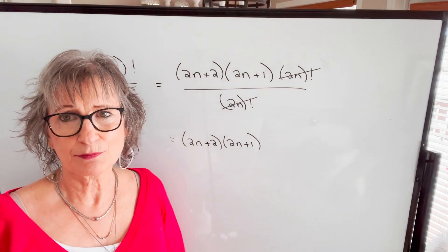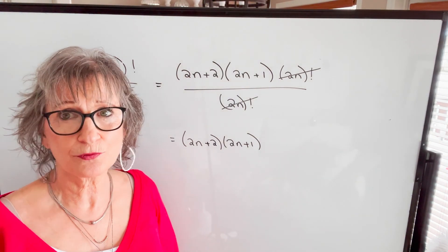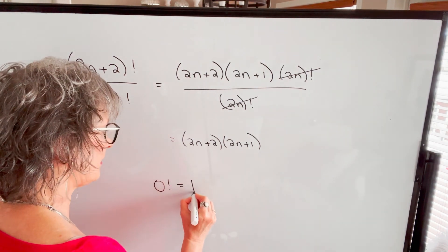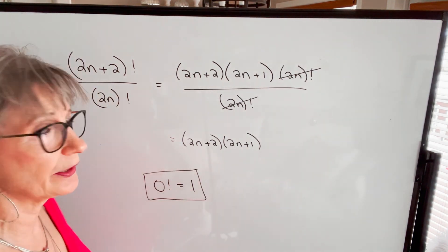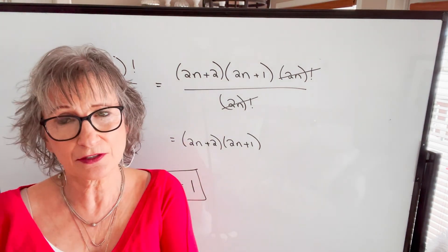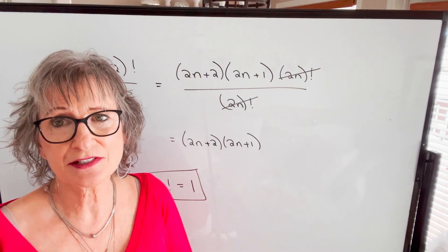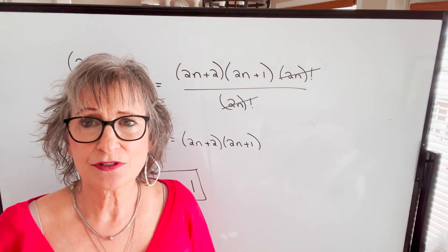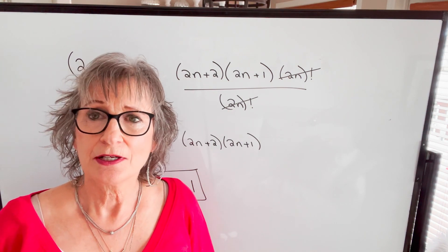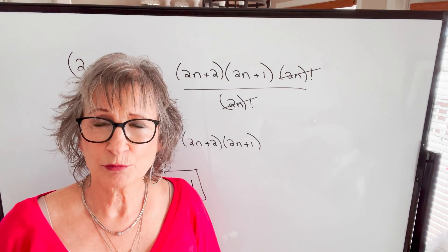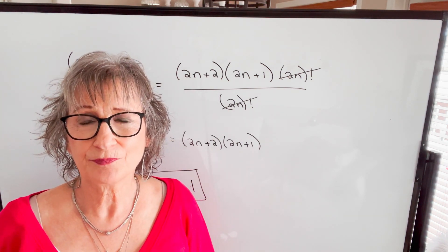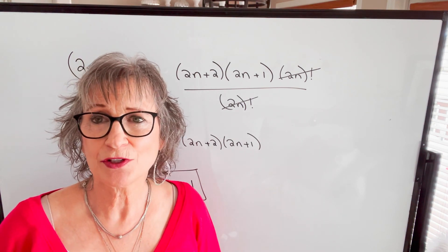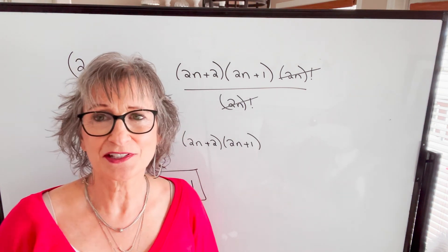One other thing I forgot to mention was 0 factorial. For now, accept that it's equal to 1. It's not going to fit into the definition we've been using, but it is defined as 1. Factorials are used for counting principles and probability — combinations and permutations — and I'm going to be doing videos on all of those following this one.